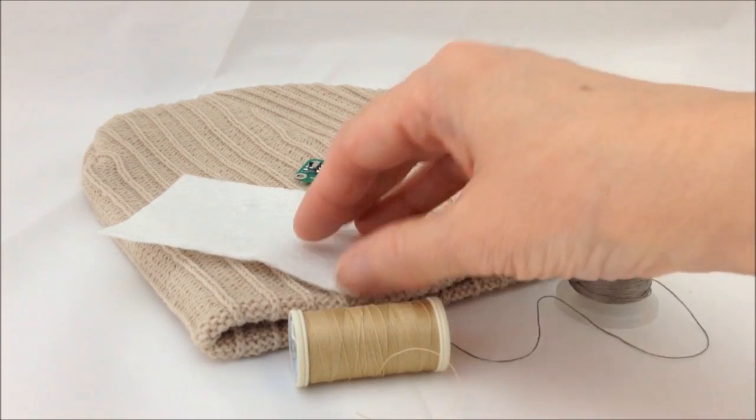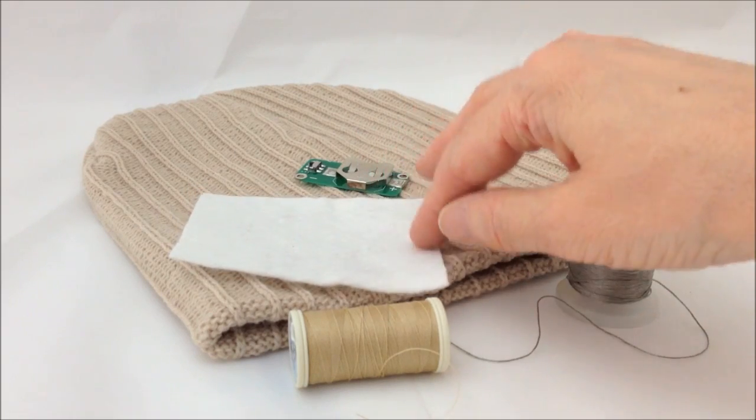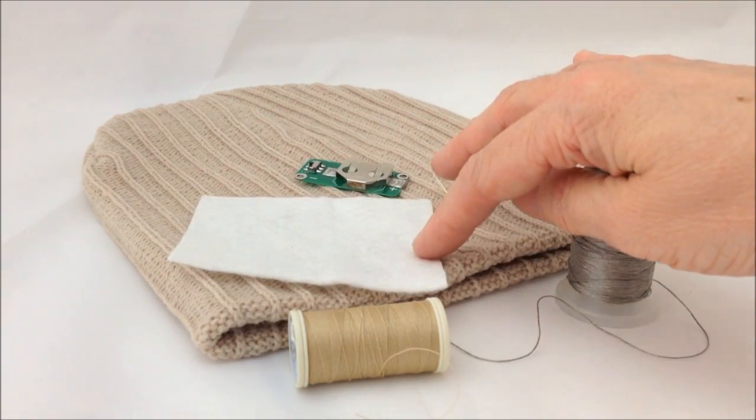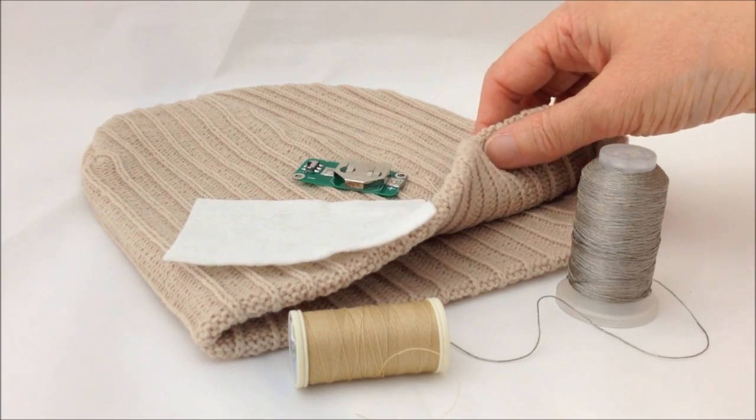You could also attach the circuit onto the felt so it can be removed by putting poppers on either side of the felt circuit and poppers on the inside of the hat as well.